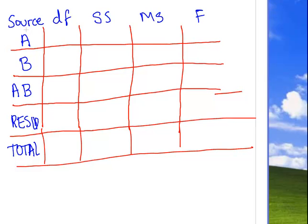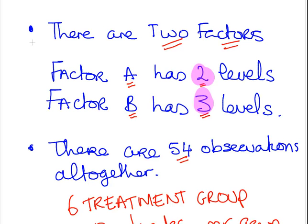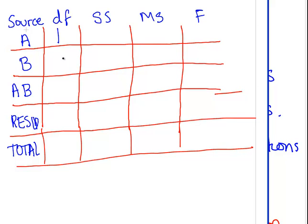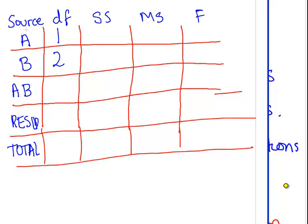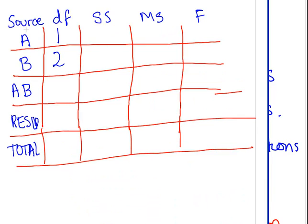So, let's go back to our other page here. So, there are two levels for factor A. So, that means the degrees of freedom for A is the number of levels minus one. Likewise for B. So, in this case it's going to be one and two respectively. We are told that there are 54 observations all together. So, that means the total degrees of freedom is going to be 53.